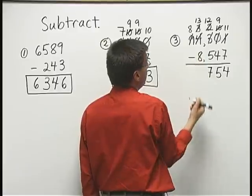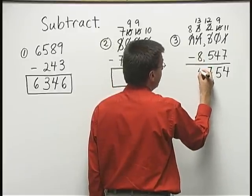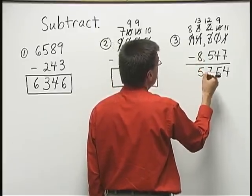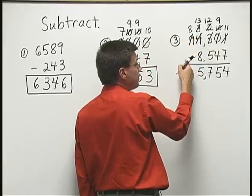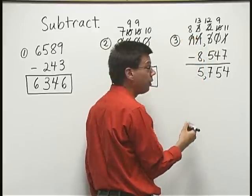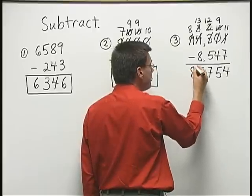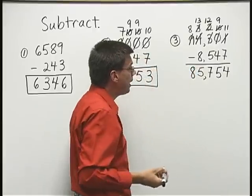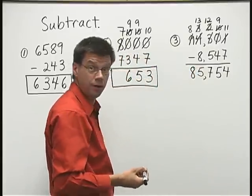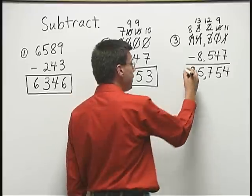Thirteen, take away eight, is five. And I have eight ten thousands now. Take away none below. That leaves me with eight still. And 85,754 is my answer.